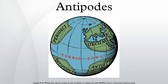Approximately 15% of land territory is antipodal to other land, representing approximately 4.4% of the Earth's surface. The largest antipodal land masses are the Malay Archipelago, antipodal to the Amazon Basin and adjoining Andean Ranges; East China and Mongolia, antipodal to Chile and Argentina; and Greenland and the Canadian Arctic Archipelago, antipodal to East Antarctica.